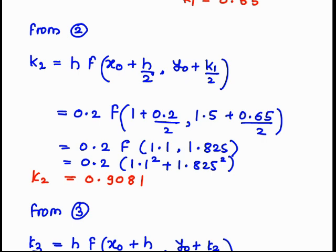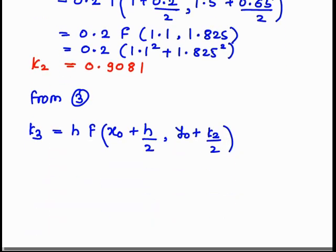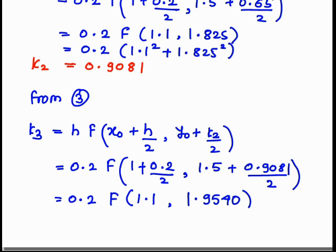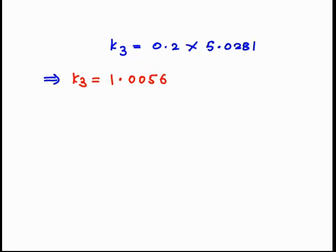Next, we calculate k₃ = h·f(x₀ + h/2, y₀ + k₂/2). Substituting h = 0.2, x₀ = 1, y₀ = 1.5, and k₂ = 0.9081, we get f(1.1, 1.9540). The function is x² + y², so: 0.2 × (1.1² + 1.9540²), giving k₃ = 1.0056.